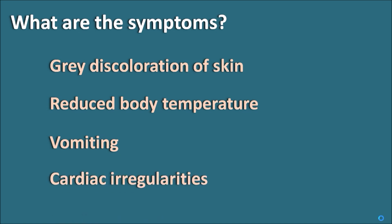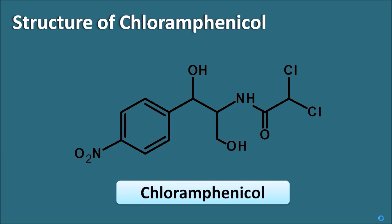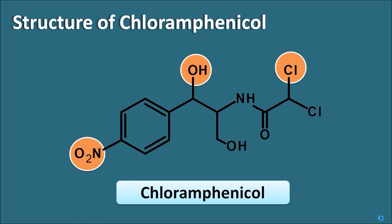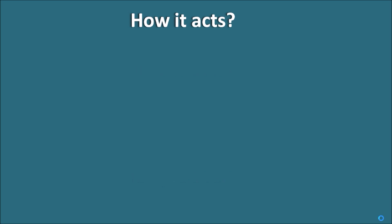All these are fatal conditions which should be immediately treated. This syndrome is caused by chloramphenicol, so let us first see what is the structure of chloramphenicol. Chloramphenicol has a structure containing a few polar groups: an OH group, a chlorine group, and a nitro group. All these groups are polar, rendering chloramphenicol polar in nature.